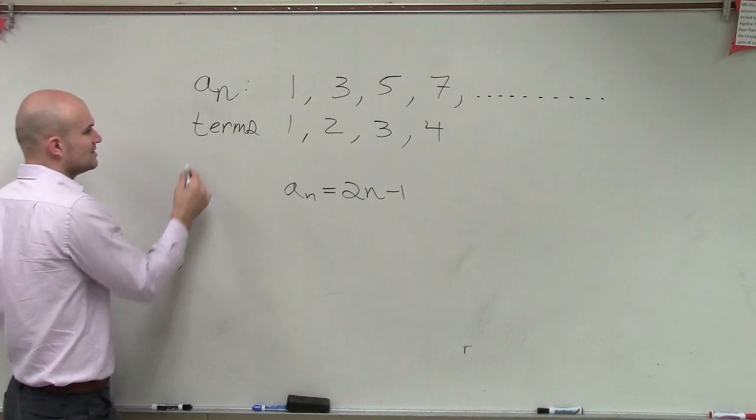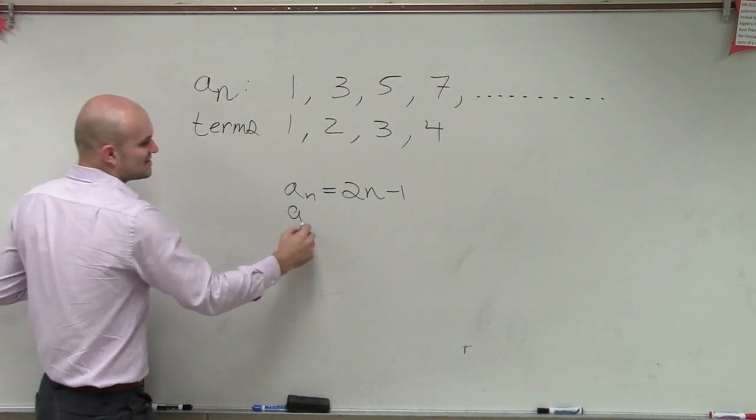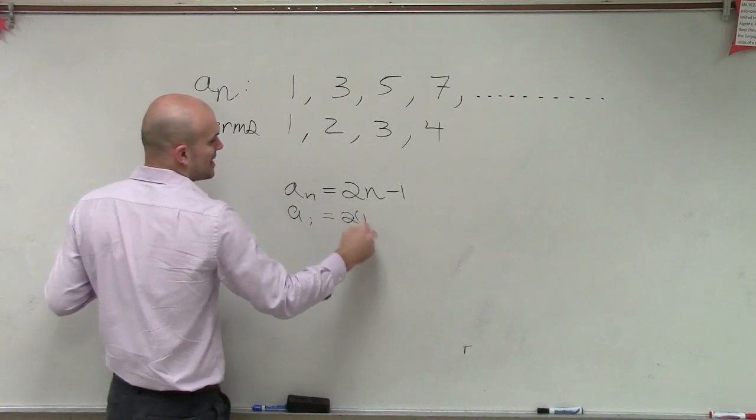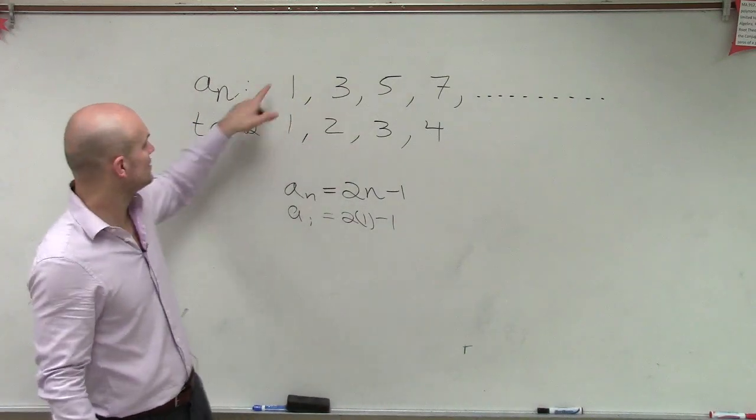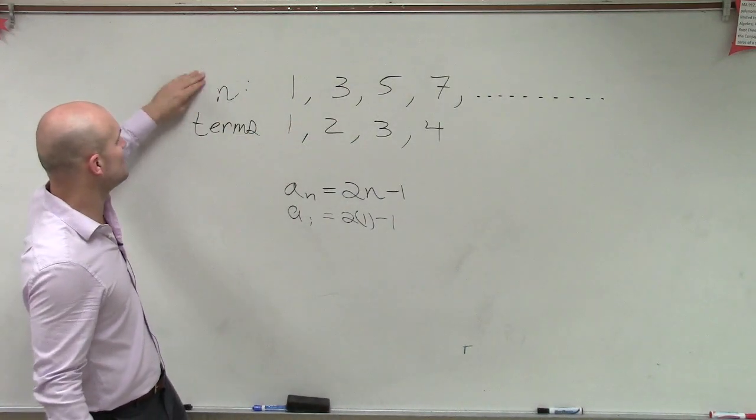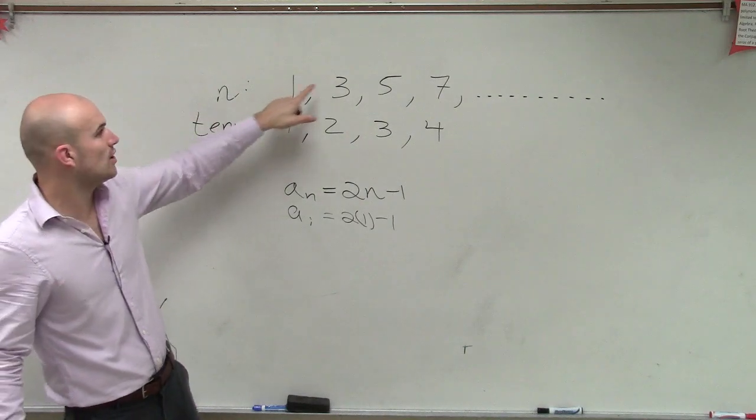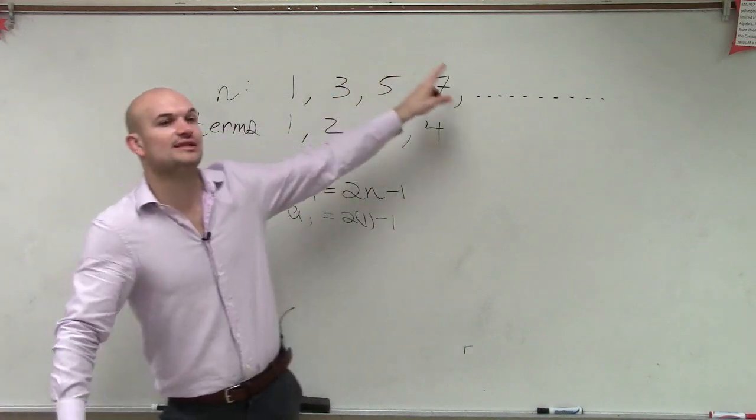But remember, each one is determined. You could have a sub 1 equals 2 times 1 minus 1. So what I'm saying is the n value for each, we just say n though, because this is a sub 1, this is a sub 2, this is a sub 3, this is a sub 4.